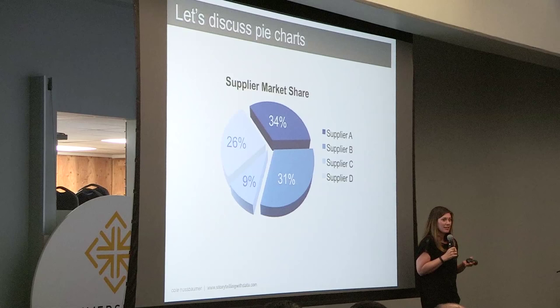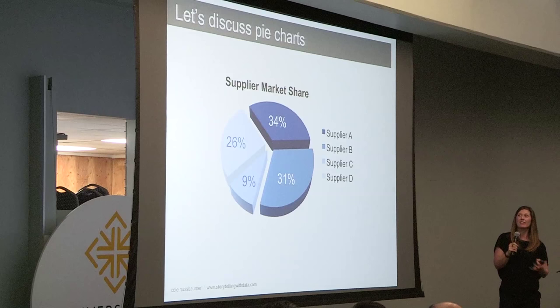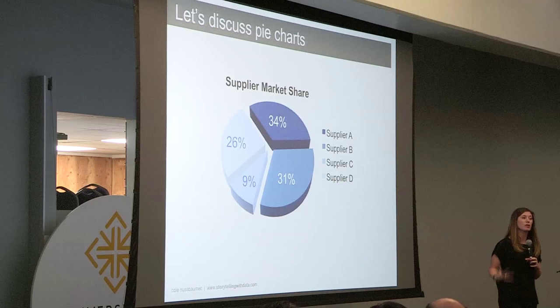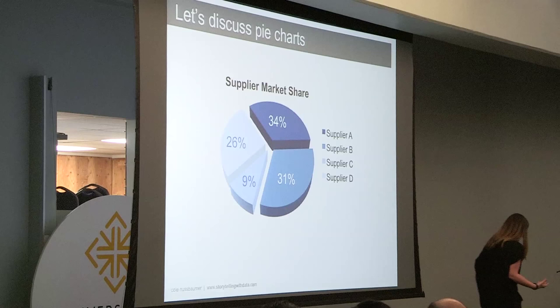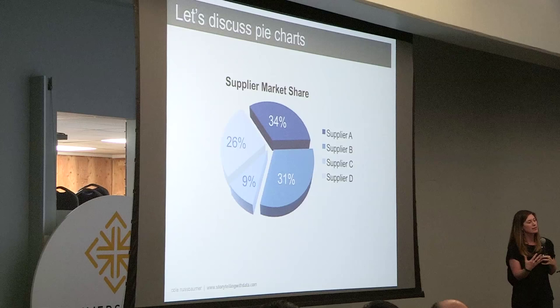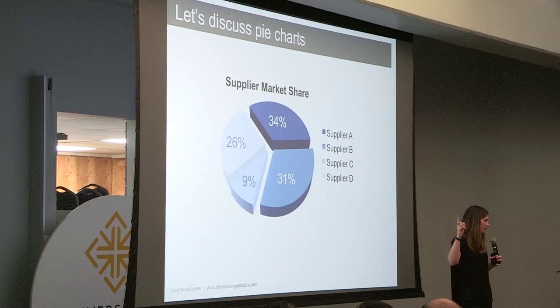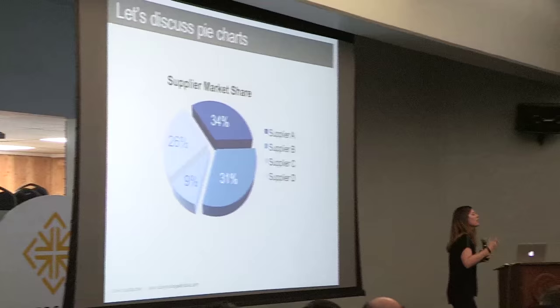There aren't a lot of hard and fast rules when it comes to data visualization — it sits at this interesting intersection between art and science. But there are some rules: bar charts must have a zero baseline, and another rule I'll introduce now is never use 3D. The only exception is for actually plotting a third dimension, and even then it gets very tricky quickly. The other issue is that a human's eyes have a hard time ascribing quantitative value to two-dimensional space — said more simply, pie charts are hard for people to read. Our eyes don't do a good job of measuring angles.